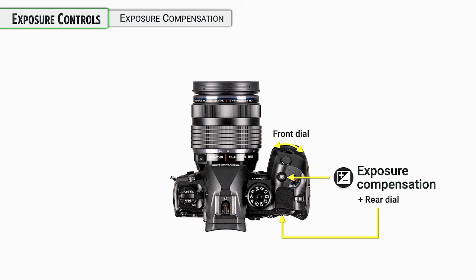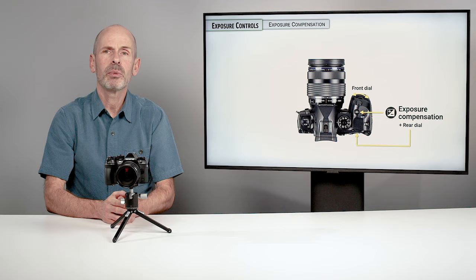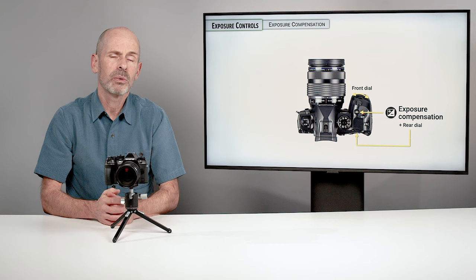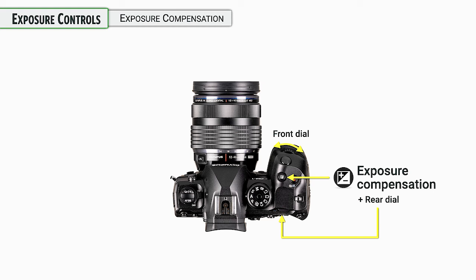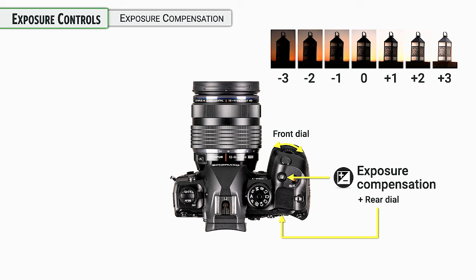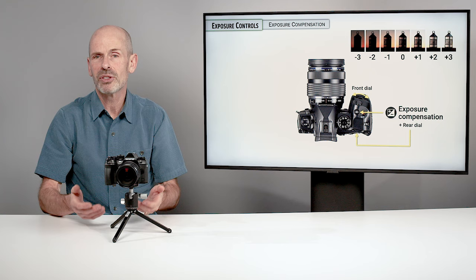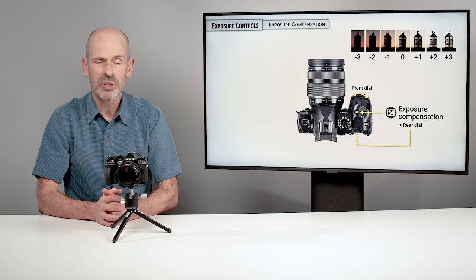Next up is the dedicated exposure compensation button. We've already played with this a little bit, but it gives you another way to set exposure compensation — especially useful in movie exposure mode. You can use either the front dial or the button plus rear dial. Since dials can be reassigned to other functions, having a dedicated button means you can always access exposure compensation regardless of how the dials are configured.